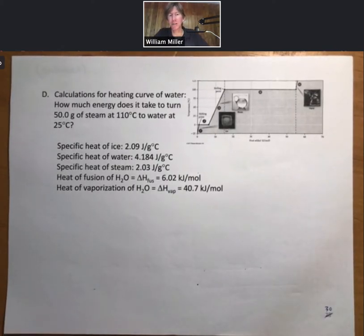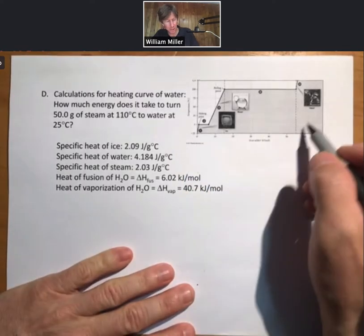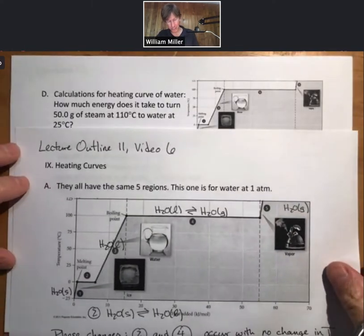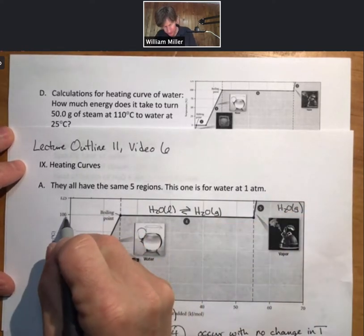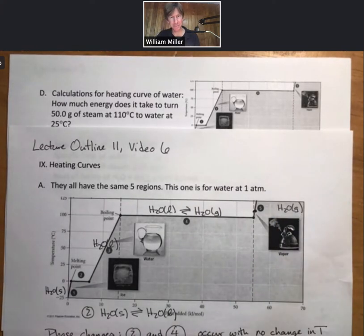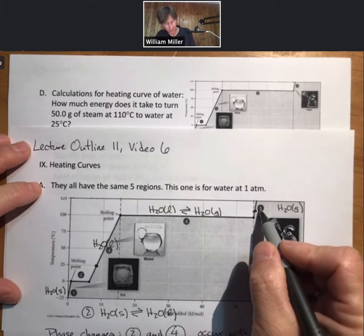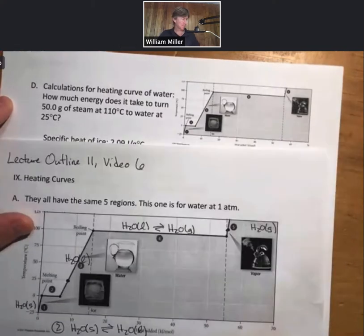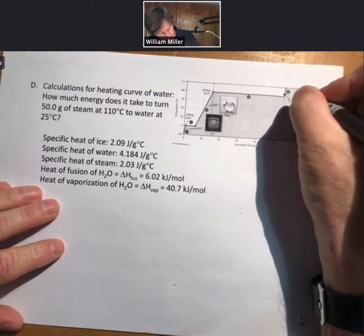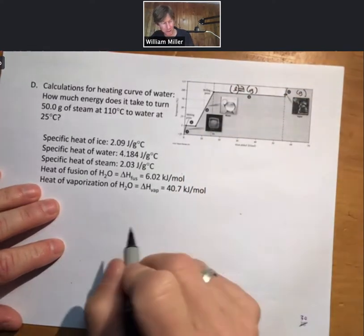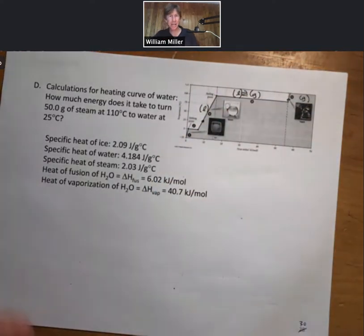Now let's do some calculations involving the heating curve for water. Question: How much energy does it take to turn 50 grams of steam at 110 degrees Celsius to water at 25 degrees Celsius? Now, I have the heating curve in miniature here. I'm going to go back to my big heating curve for a second and just point out to you that if we're at 110 degrees Celsius, we're somewhere in the H2O gas phase. And then we're going to go down to 25 degrees Celsius, which is right here. So we're going to have what amounts to a 5, a 4, and a 3 calculation. So I'll just draw that here. We're up here in the gas phase. We have this as the liquid to gas transition. And then liquid. And we end up down here at 25 degrees Celsius.